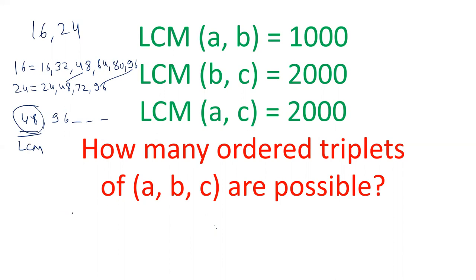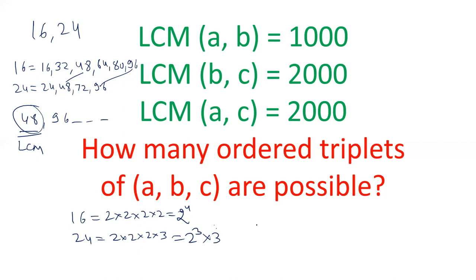To find the LCM of two numbers, prime factorize them. 16 is 2×2×2×2 = 2⁴, and 24 is 2×2×2×3 = 2³×3. To find the LCM, take the highest power of each prime: 2⁴ and 3¹, giving 16×3 = 48. So the LCM is 48.